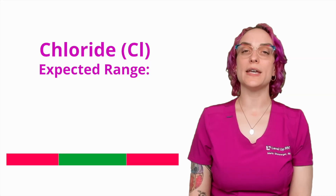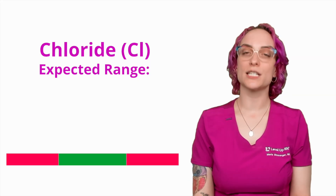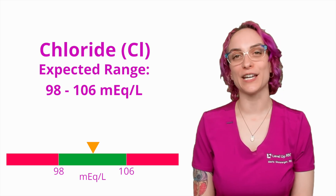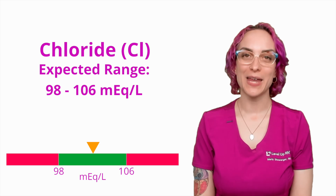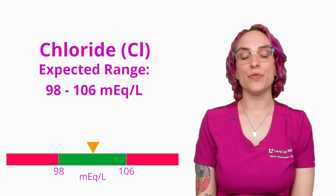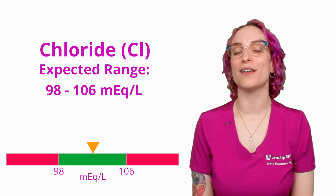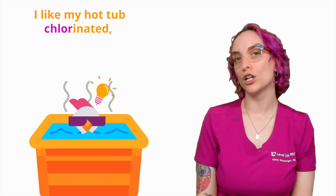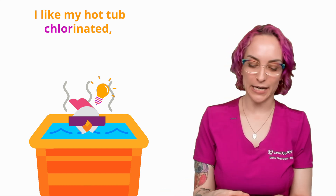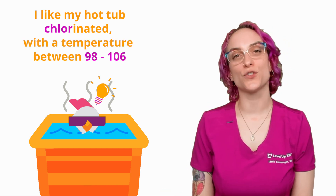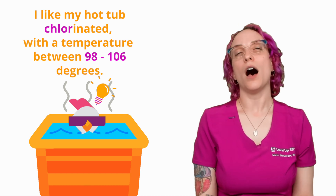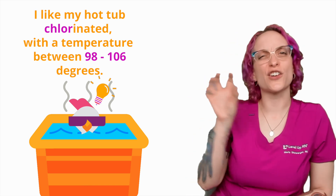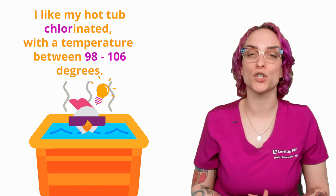So to start with, let's talk about the expected value for chloride. The expected value here is going to be 98 to 106 milliequivalents per liter, or mEq/L — 98 to 106. It's a hard number to remember, that's why we give you our cool chicken hints. Our little hint here is: I like my hot tub chlorinated — chloride, chlorinated — with a temperature between 98 to 106 degrees. 106 would be a little warm for a hot tub, but that helps to remind you of what general ballpark we're talking about when it comes to chloride.